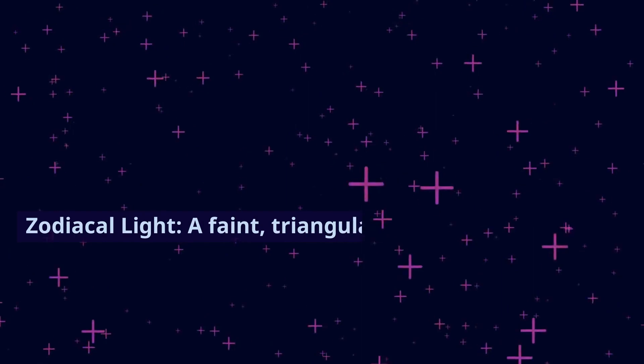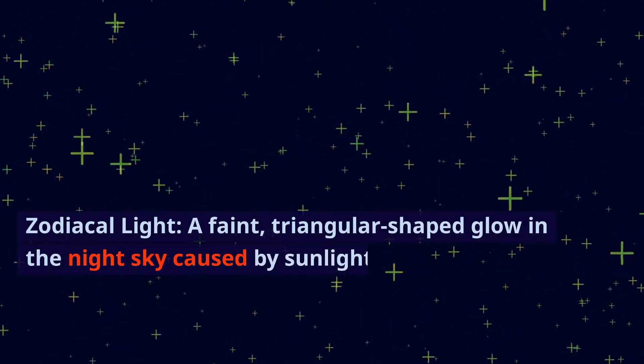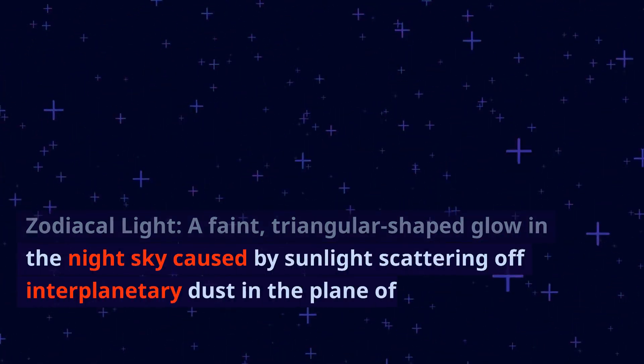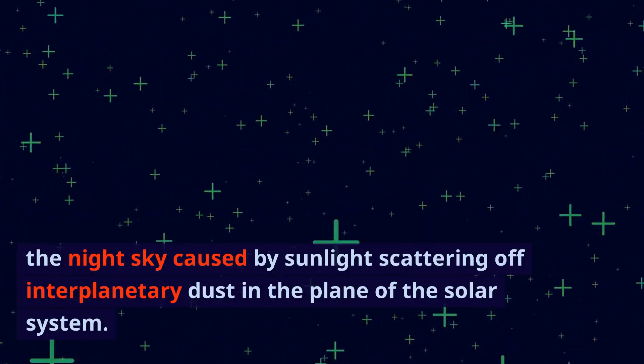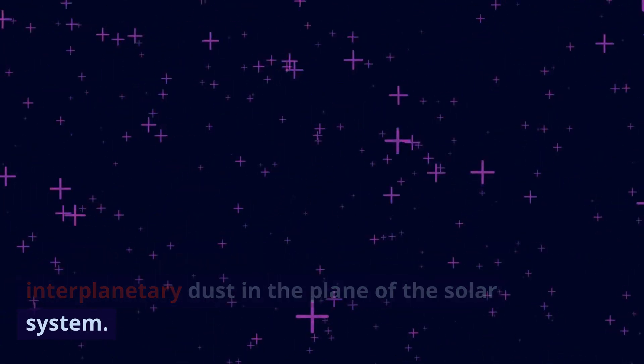Zodiacal light: a faint, triangular-shaped glow in the night sky caused by sunlight scattering off interplanetary dust in the plane of the solar system.